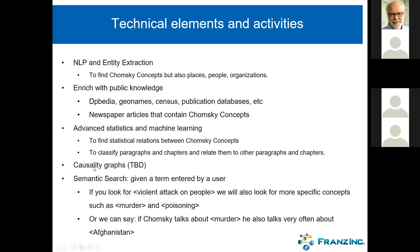One thing we haven't done yet is the causality graph. Chomsky makes a lot of claims about A causes B, and then B and C cause D. There's a group of volunteers starting to go through the work of Noam Chomsky to find these causality chains and put them as a graph in the database. And then we can do semantic search — looking for 'violent attack on people' and also finding more specific concepts like murder and poisoning.